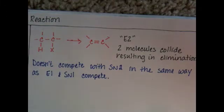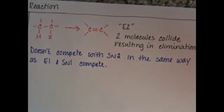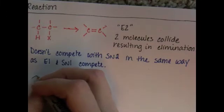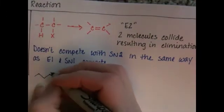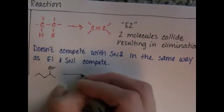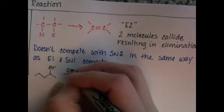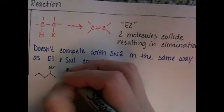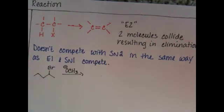So, for example, the first example that we're going to do is showing you a reaction where there is E2 and SN2 competition. And we are going to use 2-bromopentane with methoxide, my favorite nucleophile.